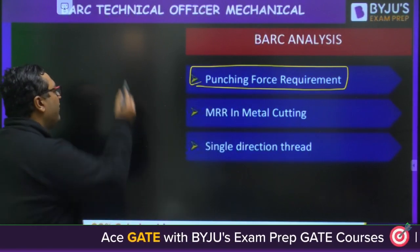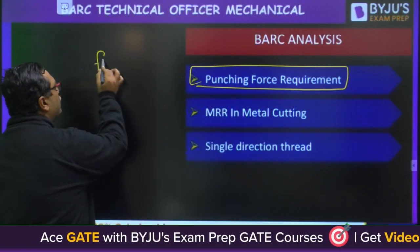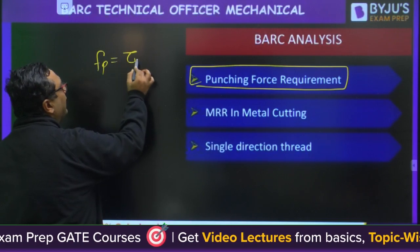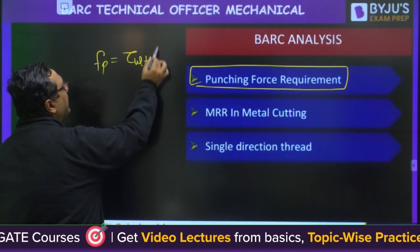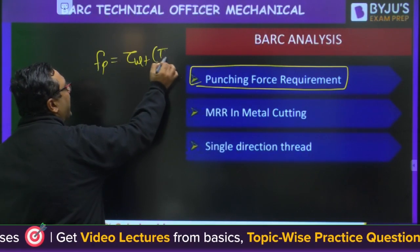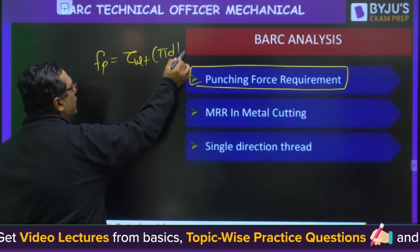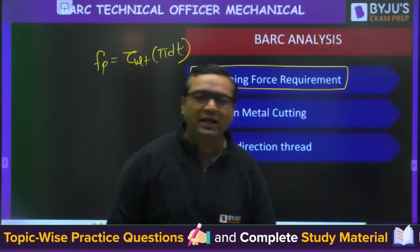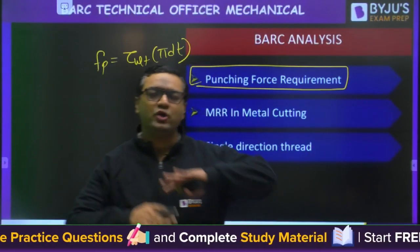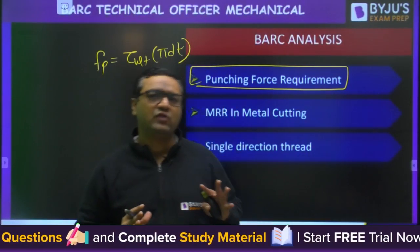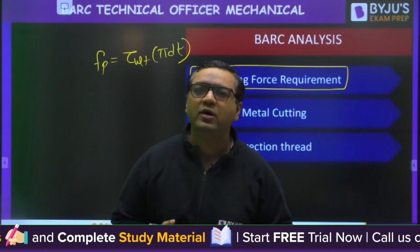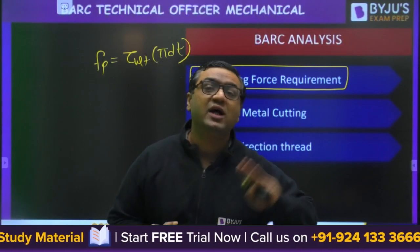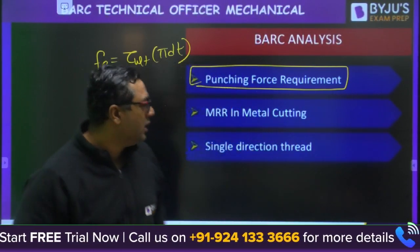You know we have done that kind of question. The punching force requirement formula is τ_ultimate × π × d × t. That kind of question was asked — we have also done it in the mock test. I have seen that the majority of questions were of the same type as what we covered in the three mock tests I have taken for you.